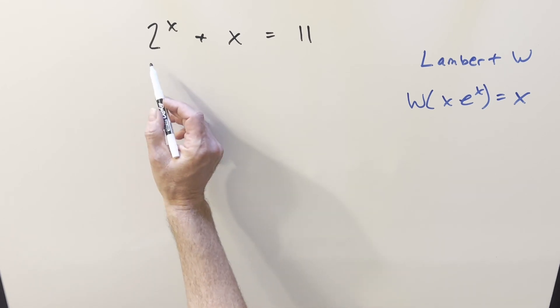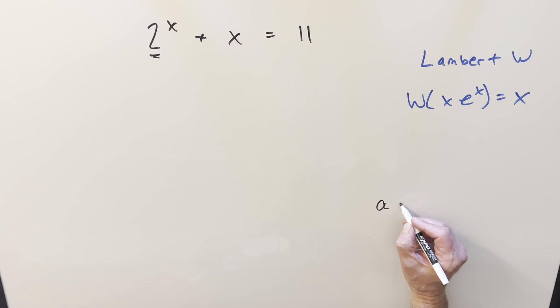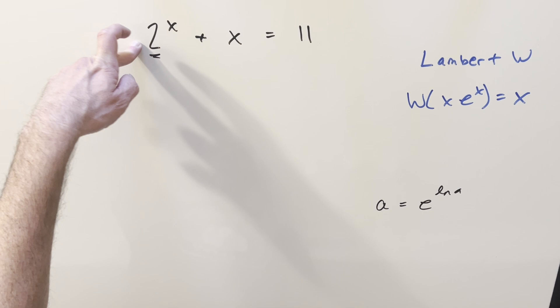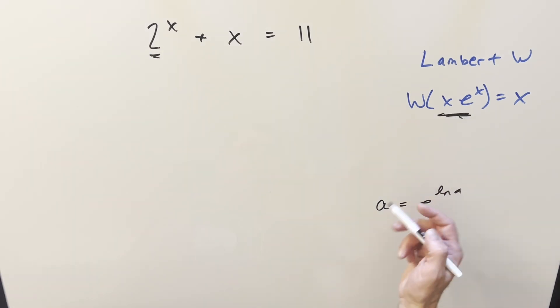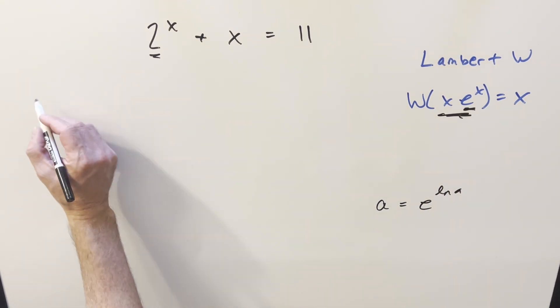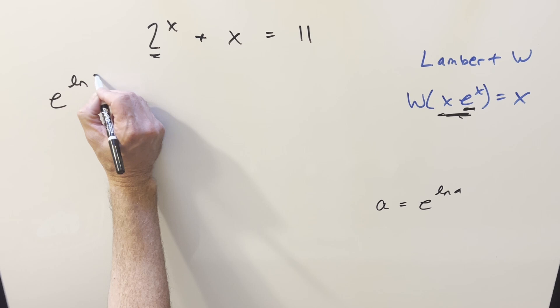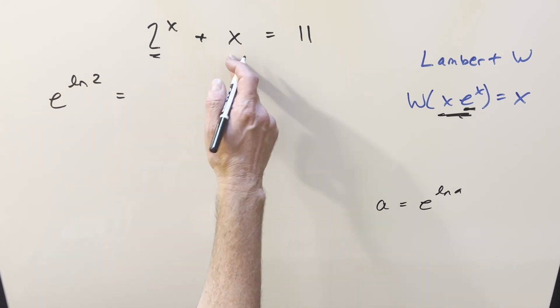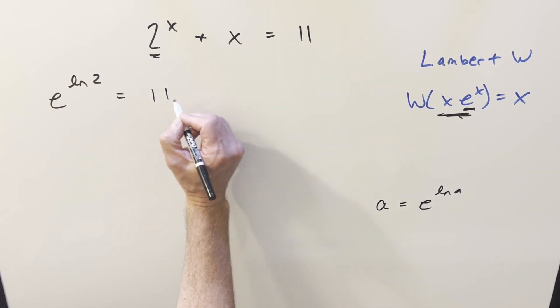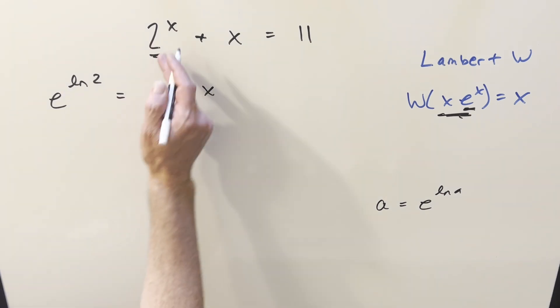So the first thing I want to notice is here we have a 2 in the base. I'd rather have e as the base. If you have any constant a, we can write this as e to the ln a. And so everything I'm doing right now is to try to transform this equation into something where we can use this formula over here to the right, and you'll see on this we have our base needs to be e. So using this formula on 2 to the x, I can write this as e to the x ln 2, and now let's subtract x on both sides so the right side of the equation becomes just 11 minus x. I forgot we have an x on there, so let's put that back.